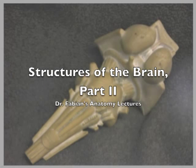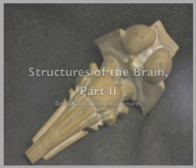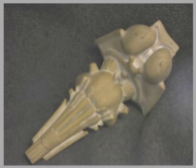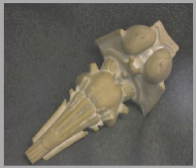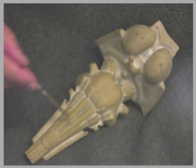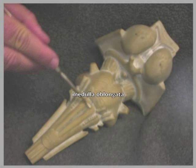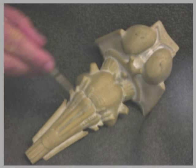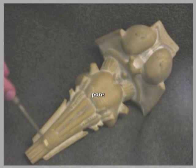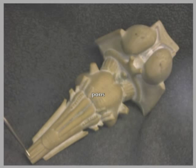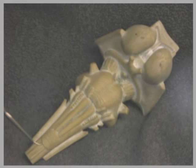Let's take a look at this model of the brainstem, and in particular we're going to look at the anterior region. Let's take a look first at the medulla oblongata. Here's the medulla oblongata from the pons, and of course this will ultimately become the brainstem after it leaves the foramen magnum.